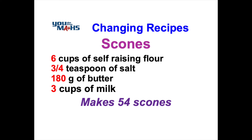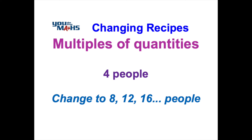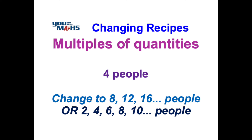So when we're changing our recipe — let's say we've got a mixture of quantities for four people — what we could do is change it to 8, 12, or 16 people, because these are all multiples of four. In other words, four goes into them evenly or without remainder, so we can change all the ingredients by the same factor. Or perhaps we could change the recipe for 2, 4, 6, 8, or 10 people. The reason why that's also easy is because 2 is a half of 4 — we can work out the ingredients for half as many people just by dividing by 2. So that's how we change a recipe: we work out a scale factor, which is the new number of people or items divided by the old number of people or items.